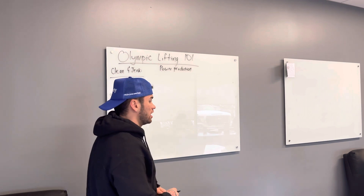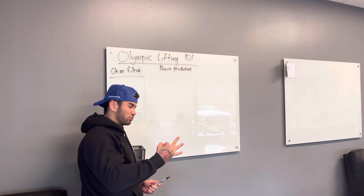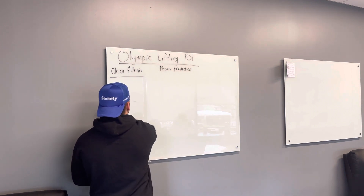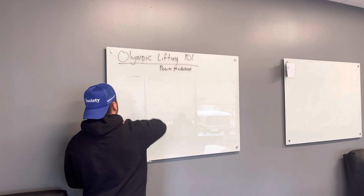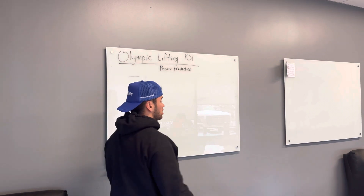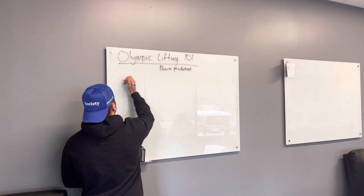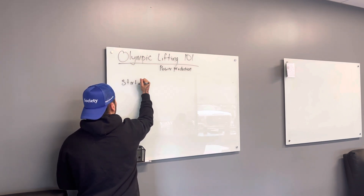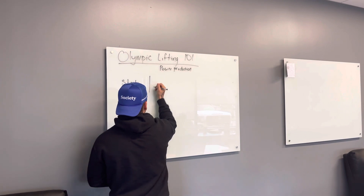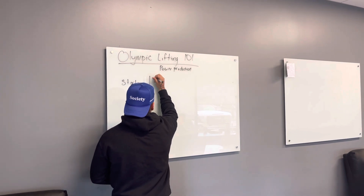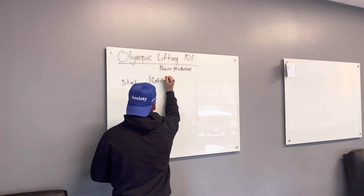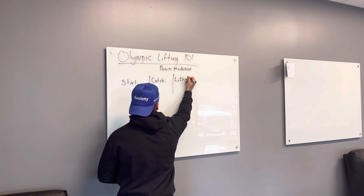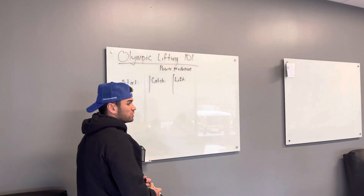From a terminology standpoint, Olympic lifts are written in three ways when programming. You start with the start position as the first piece, the second piece is the catch position, and the third piece is the type of lift. This really only refers to the clean and the snatch — the jerk is slightly different.